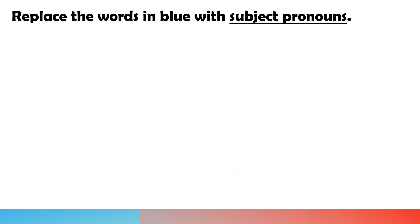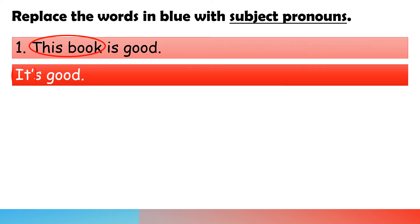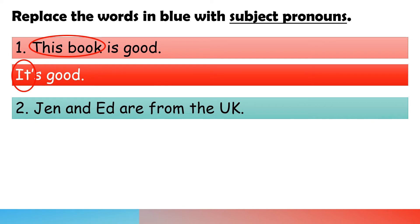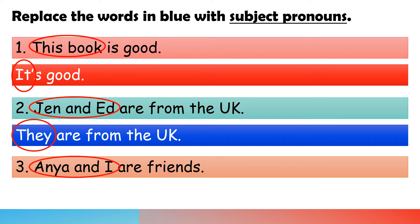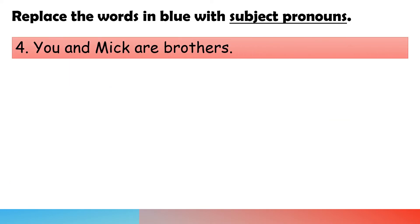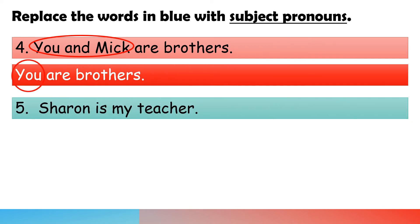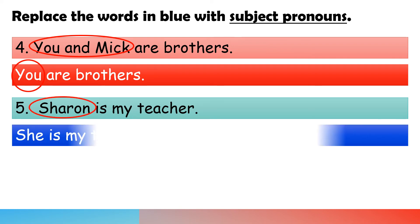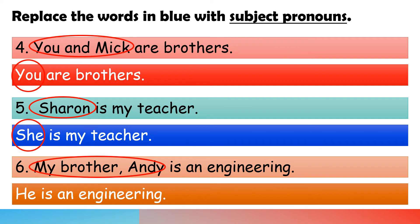Let's have some exercise. Replace the words in blue with subject pronouns. 1. This book is good → It's good. 2. Jen and Ed are from the UK → They are from the UK. 3. Anya and I are friends → We are friends. 4. You and Mike are brothers → You are brothers. 5. Sharon is my teacher → She is my teacher. 6. My brother Andy is an engineer → He is an engineer.